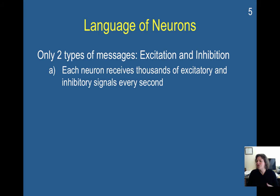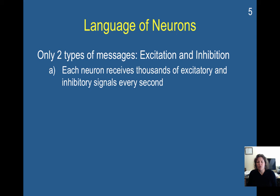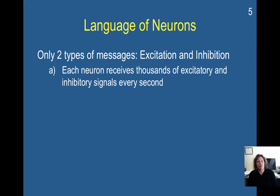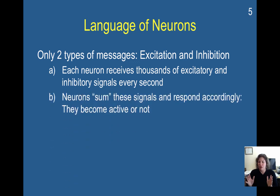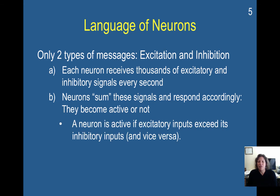An excitatory message is just like it sounds — it's going to cause the neuron to fire, promoting it to pass on its information to the next neuron. An inhibitory signal is going to do the opposite: it's going to decrease the likelihood of the neuron firing, basically saying this message stops here. Excitation and inhibition are constantly competing with each other. If you have more excitation, the neuron fires. If you have more inhibition, the neuron does not fire. This excitation-inhibition is summed: if the excitatory input exceeds the inhibitory, it will fire; if the opposite relationship is true, it will not.